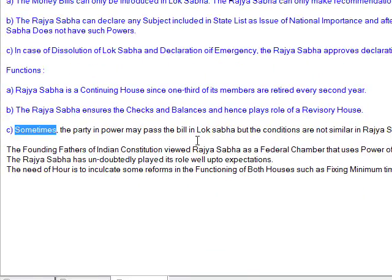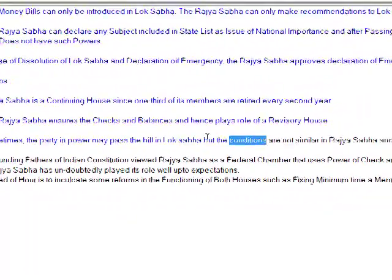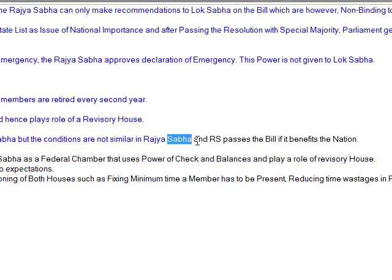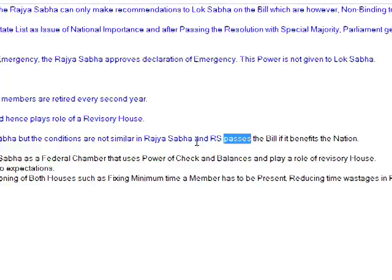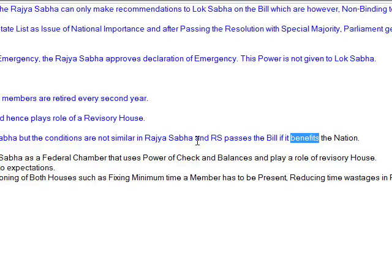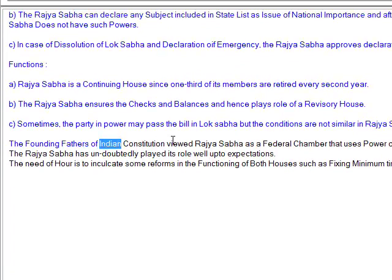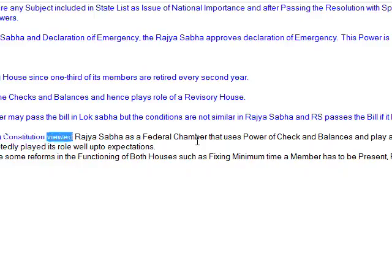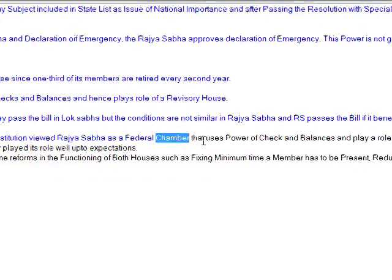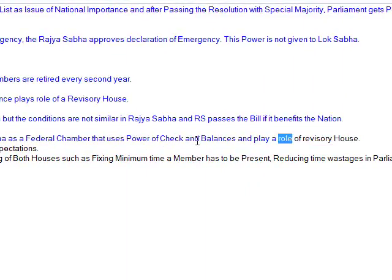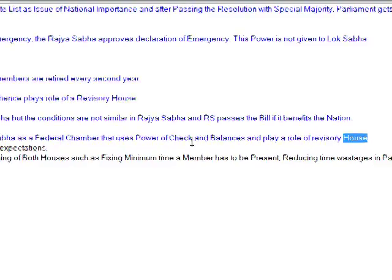Sometimes the party in power may pass a bill in Lok Sabha, but the conditions are not similar in Rajya Sabha, and it passes the bill only if it benefits the nation. The founding fathers of the Indian constitution viewed Rajya Sabha as a federal chamber that uses the power of checks and balances and plays a role of a revisory house.